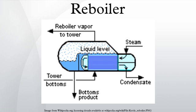Reboilers are heat exchangers typically used to provide heat to the bottom of industrial distillation columns. They boil the liquid from the bottom of a distillation column to generate vapors which are returned to the column to drive the distillation separation. The heat supplied to the column by the reboiler at the bottom of the column is removed by the condenser at the top of the column.